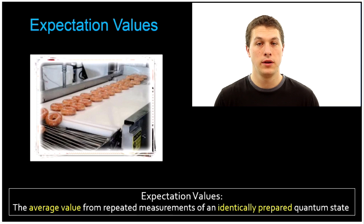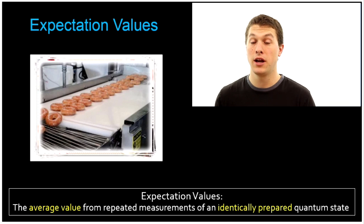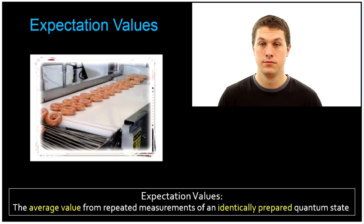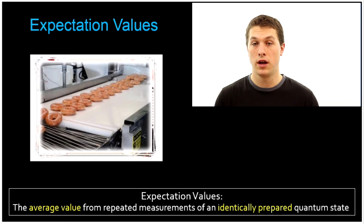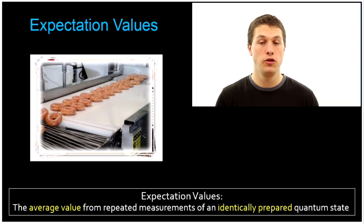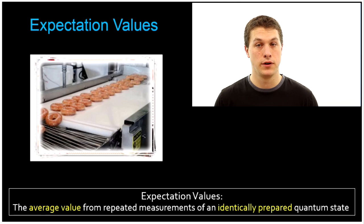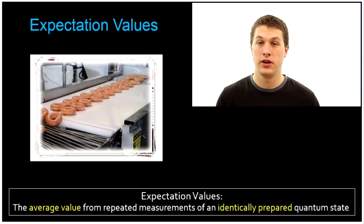Importantly, what we're doing is preparing a quantum state, measuring position, and recording it. Then preparing an identical but new quantum state, measuring position, and recording it. We repeat that over and over again and report the average. That's very different from taking one quantum state and measuring it over and over, because the second you measure a quantum state you collapse the wave function and you'll necessarily get the same answer repeatedly.